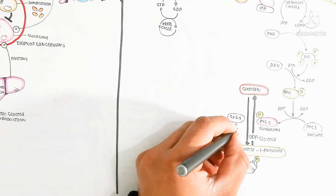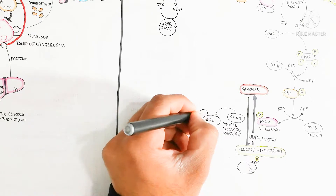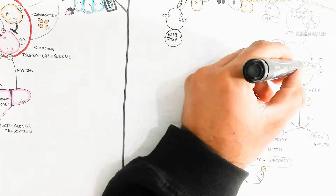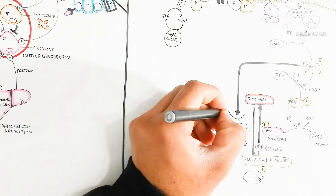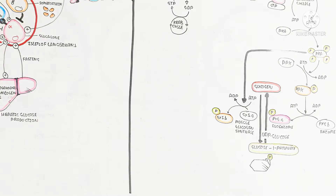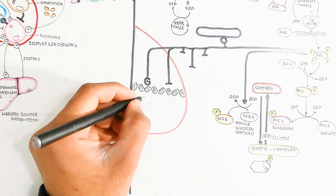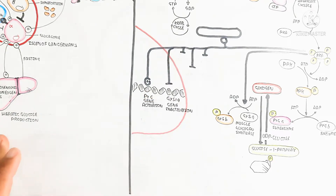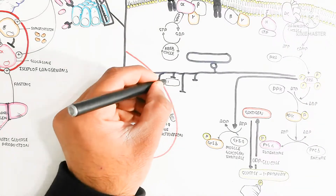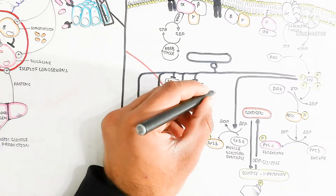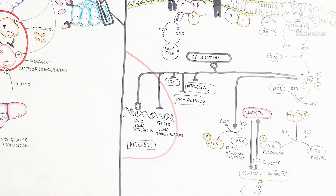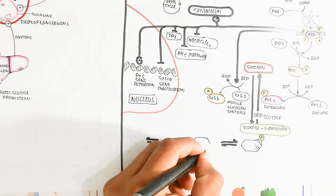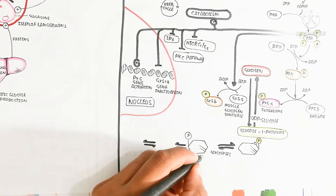Glycogen synthase A is inhibited by ATP-driven phosphorylation, converting it to glycogen synthase B (GYSB), which is inactive. Catabolism begins and inhibits cell proliferation, mitotic and meiotic division, and gene activation that produces glycogen synthase enzyme. The IP3 pathway is inhibited because it is anabolic, and the mTORC1 and mTORC2 complexes are also inhibited, as is the protein kinase C pathway. This means cell proliferation is inhibited while glycogen degradation is promoted.